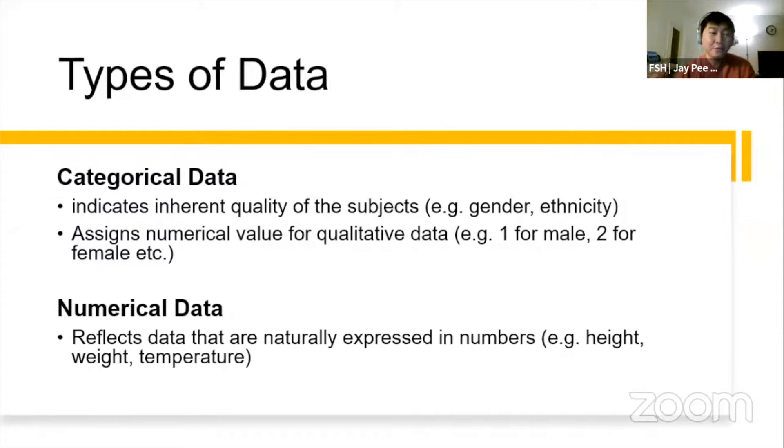It becomes quantitative if we assign a numerical value for that qualitative data. So, let's say, you assign a value of one for males, two for females, or one for Filipino, two for Americans, and so on. That's how categorical data becomes quantitative. While numerical data is expressed in numbers, for example, height, weight, temperature.